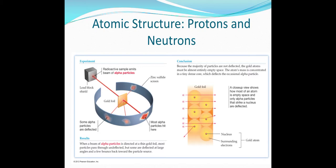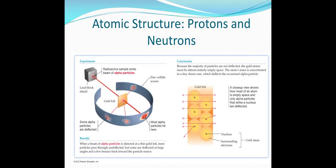From these results, we conclude that gold atoms are almost entirely empty space, which is why most particles pass through undeflected. The atom's mass is concentrated in a tiny dense core — the nucleus — which deflects the occasional alpha particle. This nucleus occupies a very small proportion of the atom's total volume, surrounded by electrons.